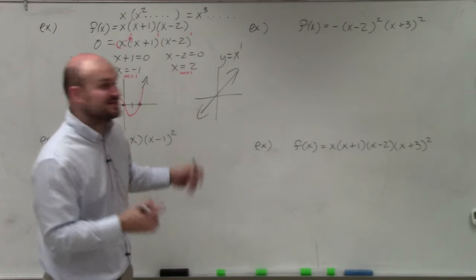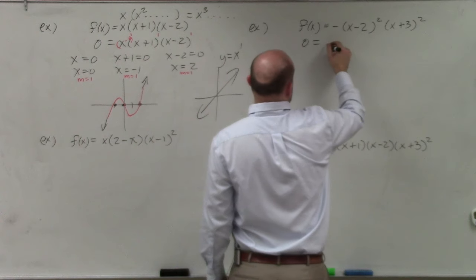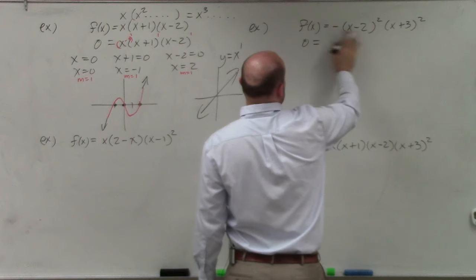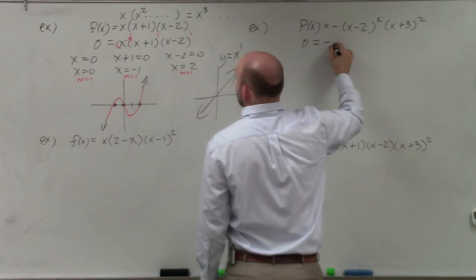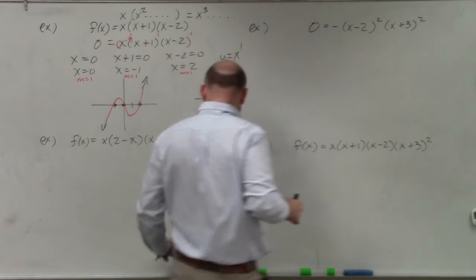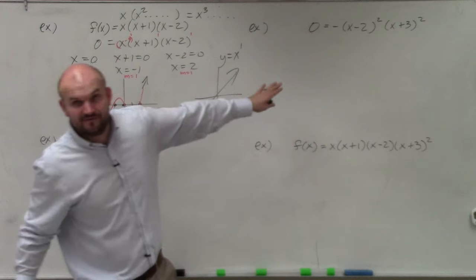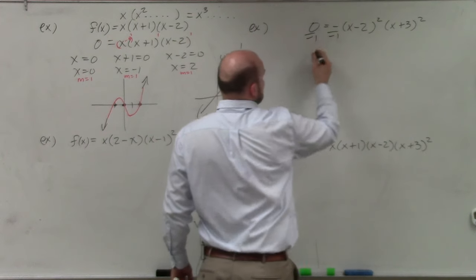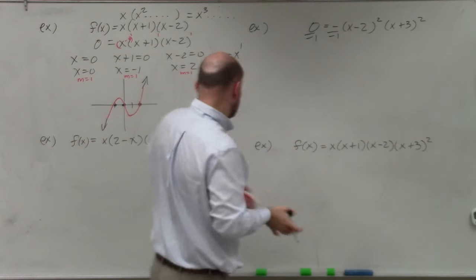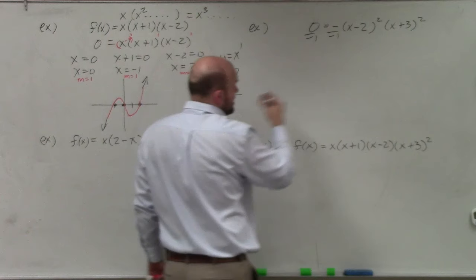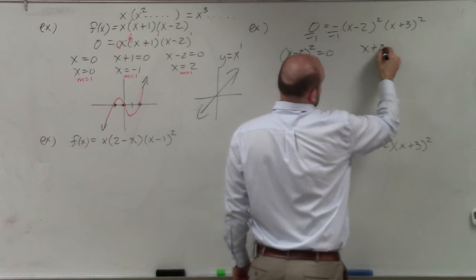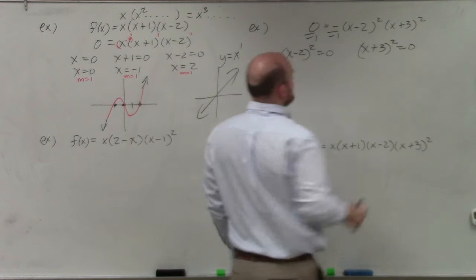In the next example, we're going to do the same thing — set this equal to 0. We have a negative out front, but we can divide both sides by negative 1 to remove it. The negative is not going to affect the zeros; it affects the end behavior but not where the graph crosses. So I set each factor equal to 0 and solve.